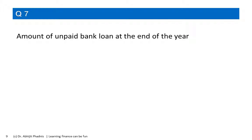Q7: amount of unpaid bank loan at the end of the year. This is something where you have taken a loan and have not yet paid it back to the bank. It's a liability, and any liability is always a part of the balance sheet.